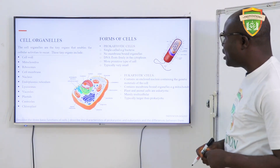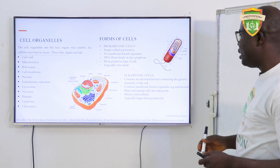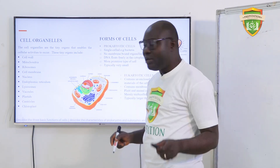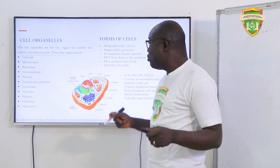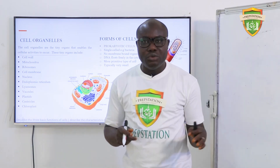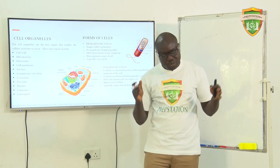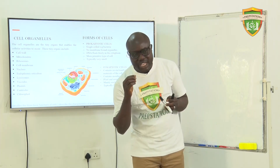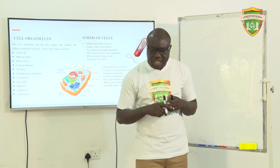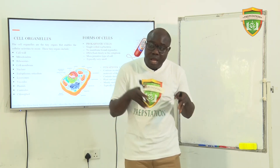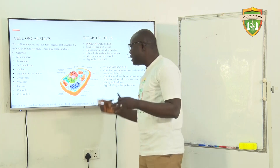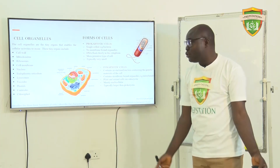The next point we're going to look at is the cell organelles. Cell organelles are the tiny organs that enable the cellular activities to occur. Most people confuse organs and organelles — organelles are not as big as organs; they are tiny, small, and minute. It is when you have plenty of organelles coming together performing similar functions that you can form a larger structure.